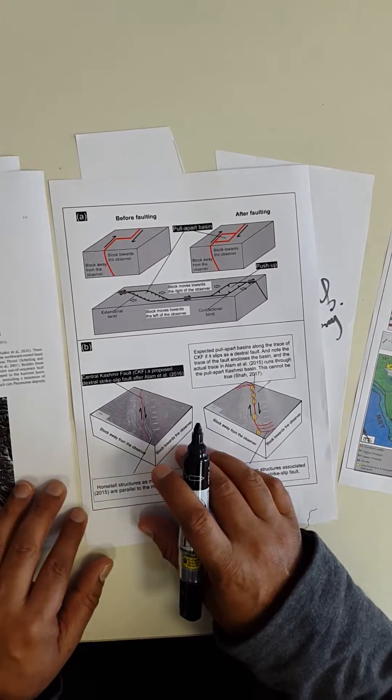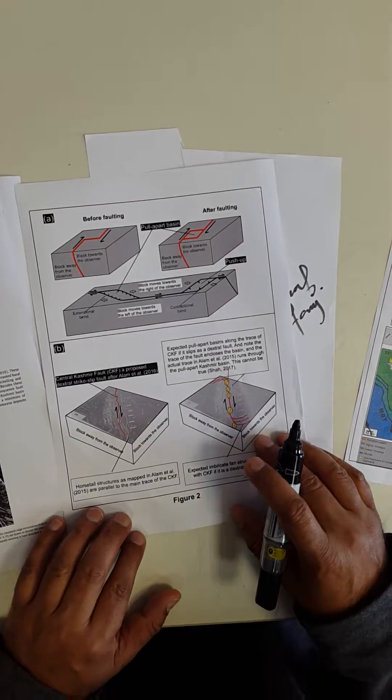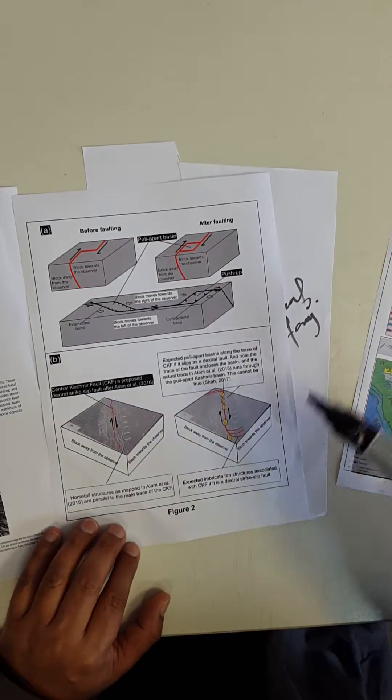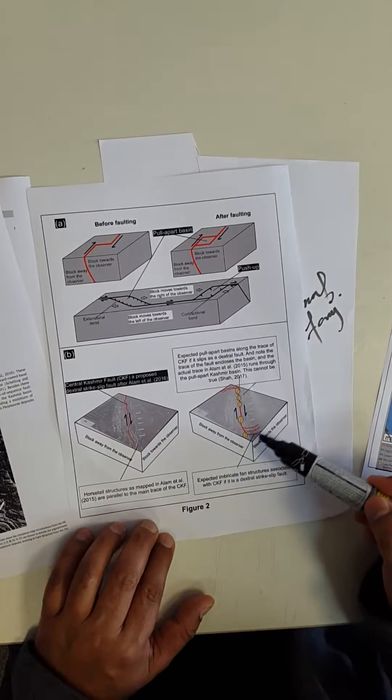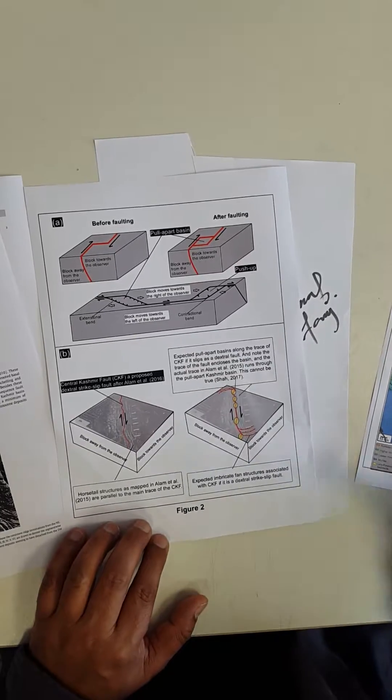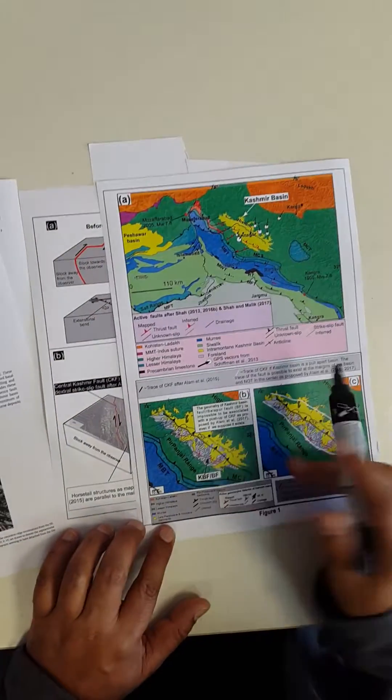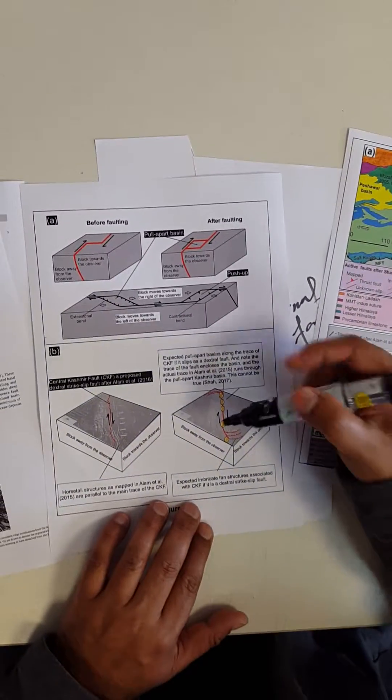So this is the major problem that this paper has: that it cannot pass through the basin, it must be at the margin of the basin, plus these fans that you see here. That's what I have highlighted in this case. As you can see here, it must be somewhere there, right?